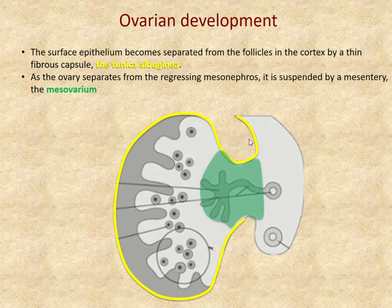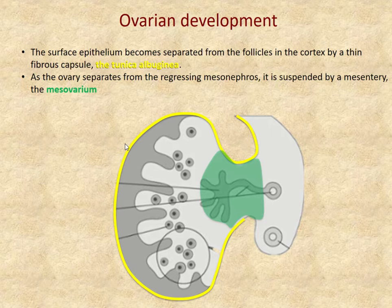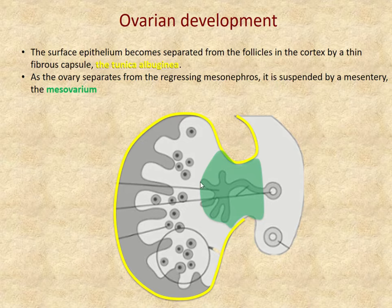Similarly to the testis, the surface epithelium of the ovary separates from the underlying developing follicles. It is not as thick as the tunica albuginea in the testis — it actually thins out — but we still refer to it as a tunica albuginea. The ovary also has a mesentery attaching it to the dorsal wall, called the mesovarium.